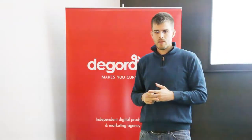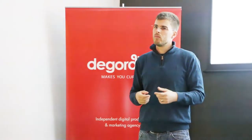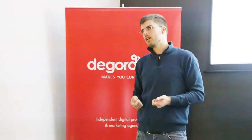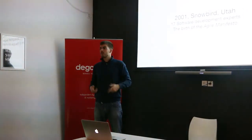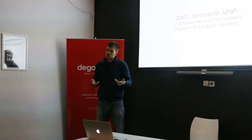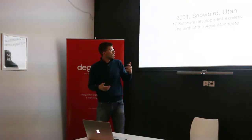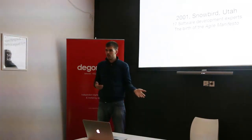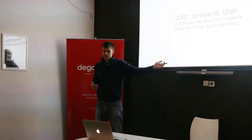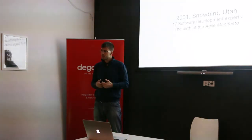In 2001, in Snowbird, Utah, there was a gathering of 17 software development experts who came together to figure out the problem — because they had experienced similar problems, found solutions, and wanted to see if there was anything common in those solutions. They all practiced various ways of developing software, and all those ways are what we today refer to as agile methodologies. It's a bit funny, because all the methodologies we call agile are actually older than the agile term itself.